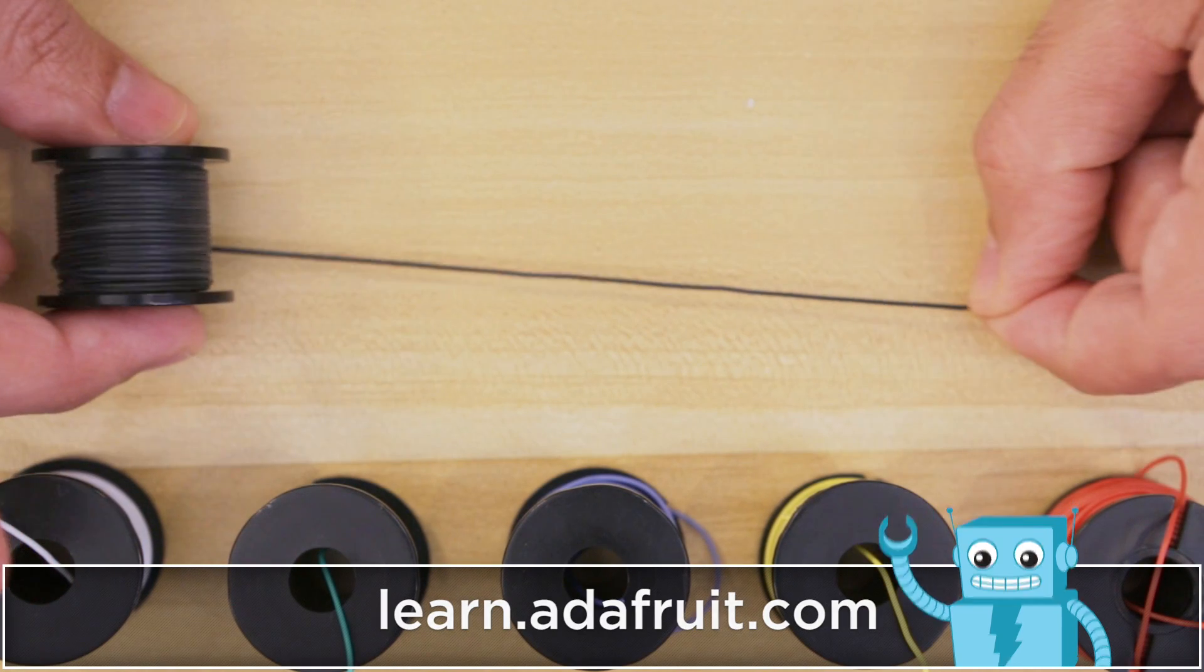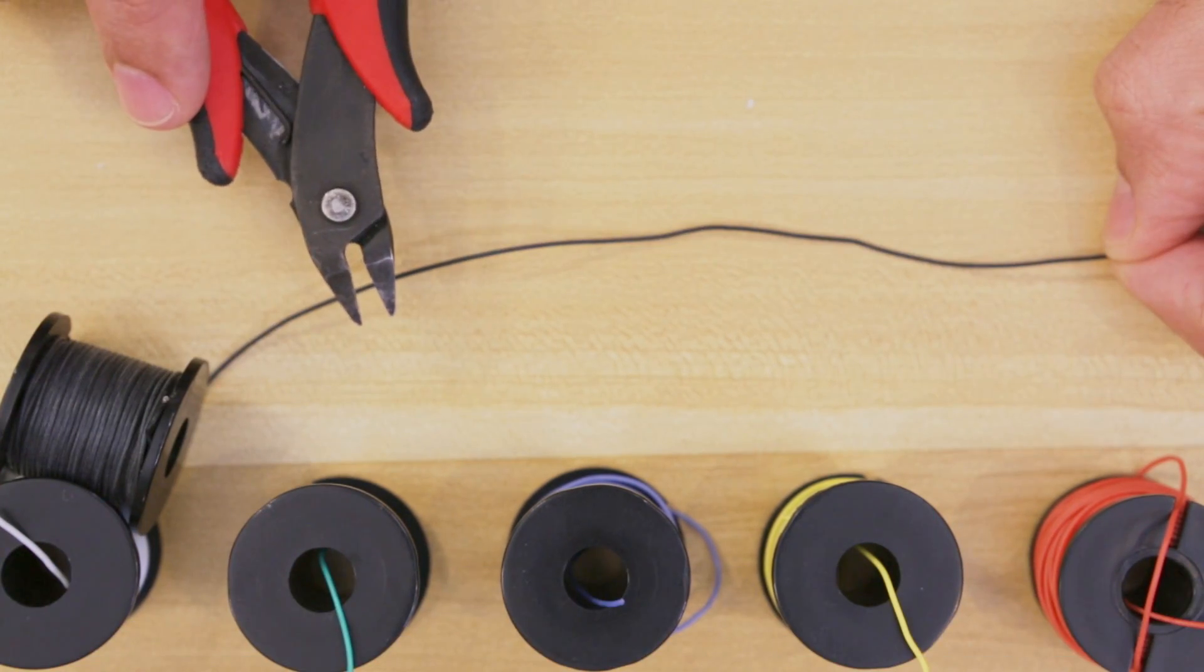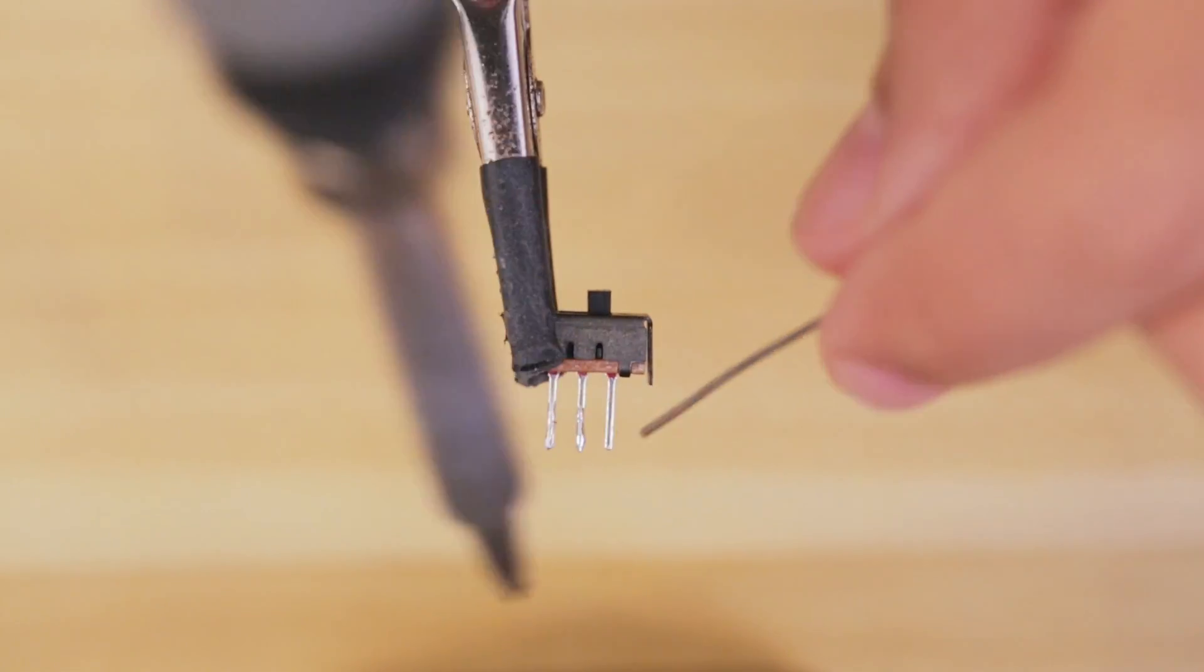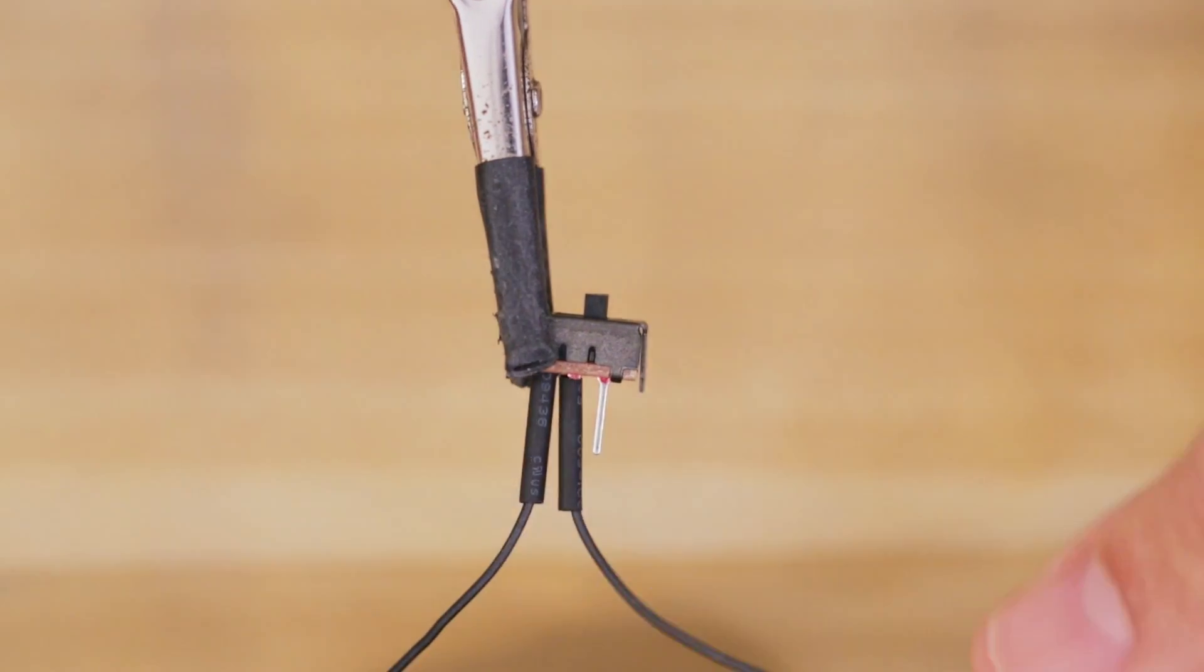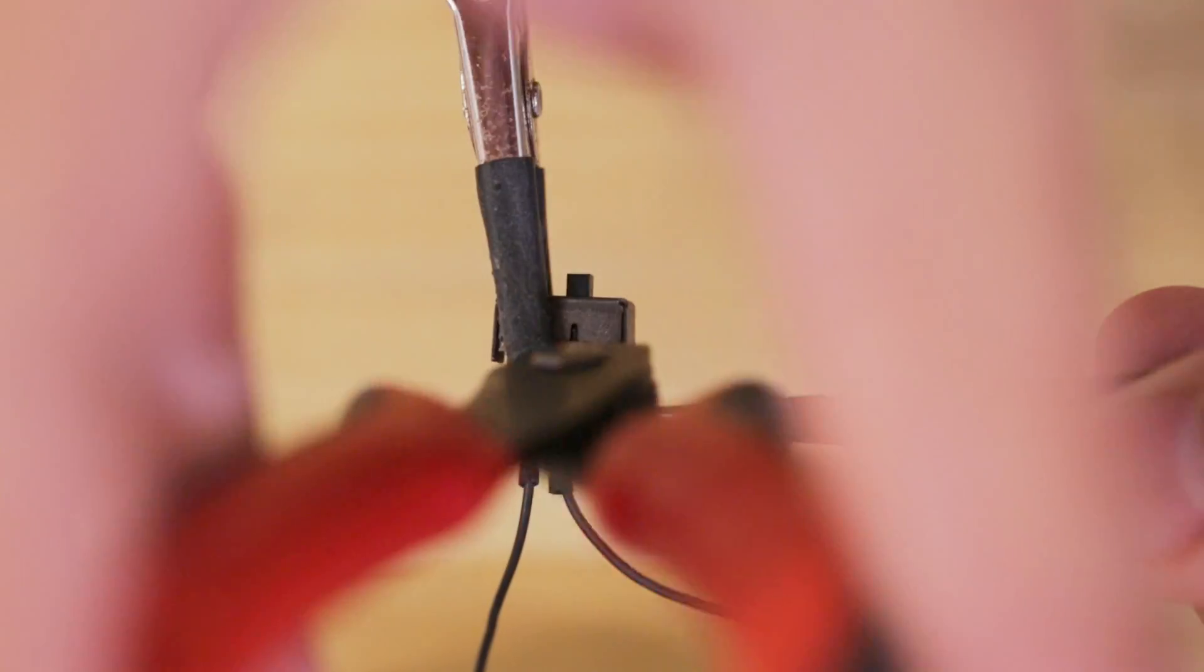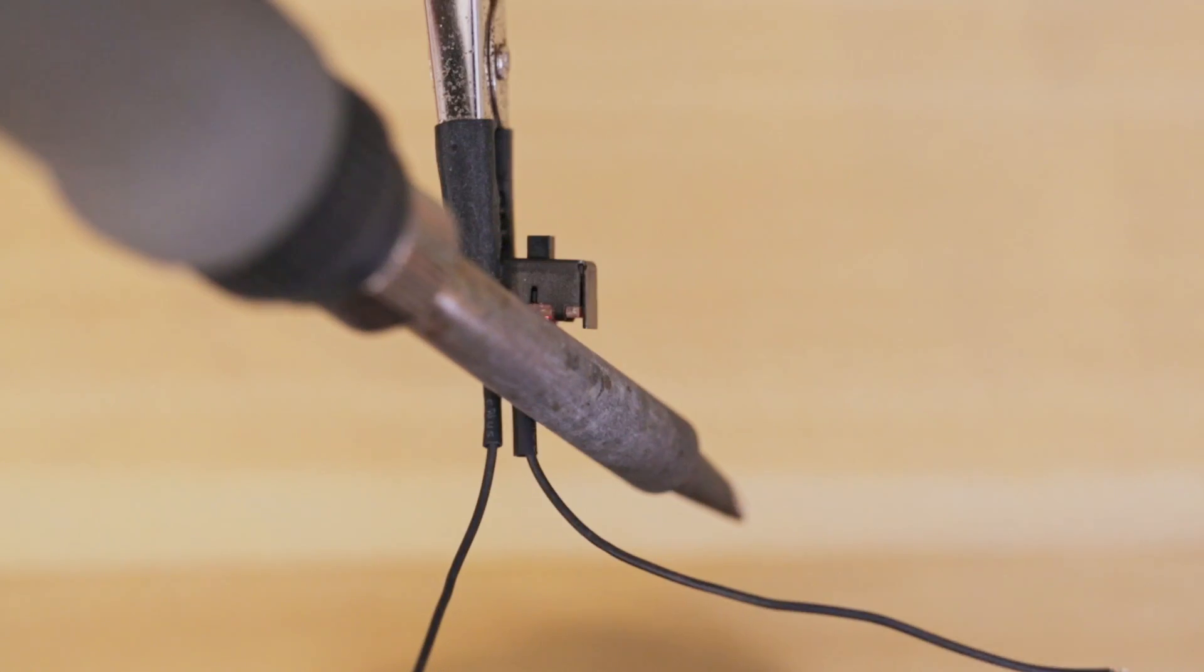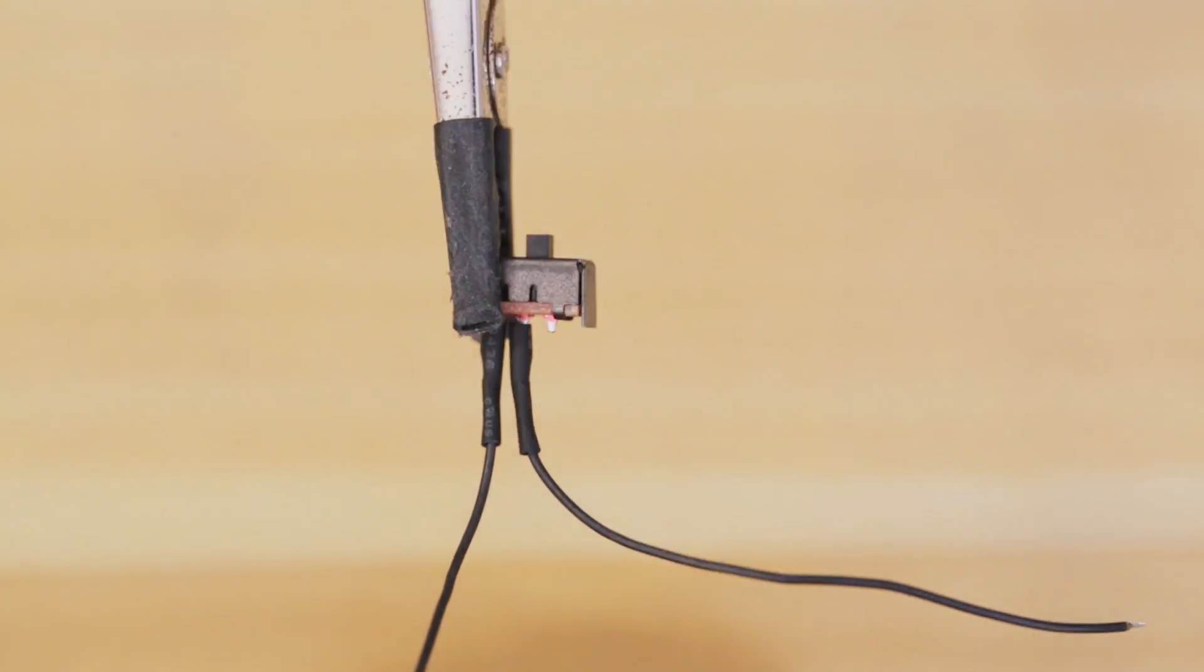We'll start by measuring and cutting wires for connecting the components. A slide switch is used to tie the enable and ground pins so we can turn the circuit on and off. We suggest using heat shrink tubing to prevent the pins from shorting. You can use the side of your soldering iron to heat and shrink the tubing.